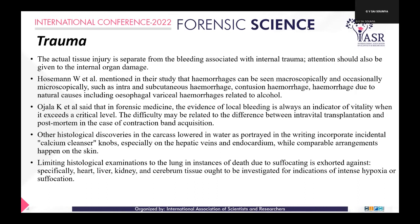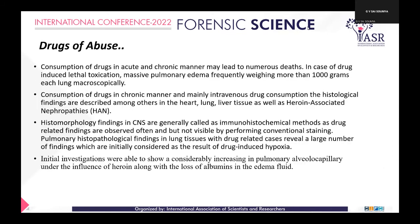Hossman mentioned in his study that hemorrhages can be seen microscopically and occasionally macroscopically, such as intra- and subcutaneous hemorrhages, contusion hemorrhage, and hemorrhage due to natural causes including esophageal hemorrhages related to alcohol. Other histological discoveries were also made, particularly in hepatic veins and endocardium, where comparable arrangements occur on the skin.